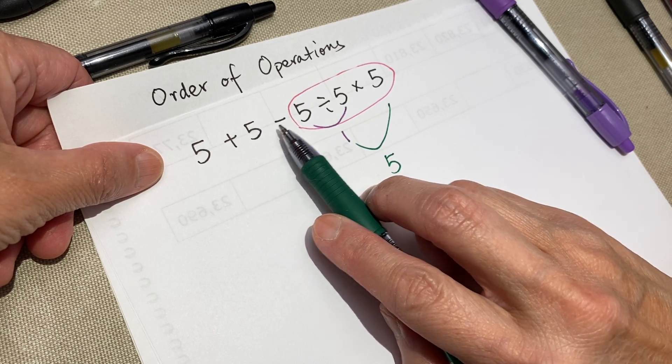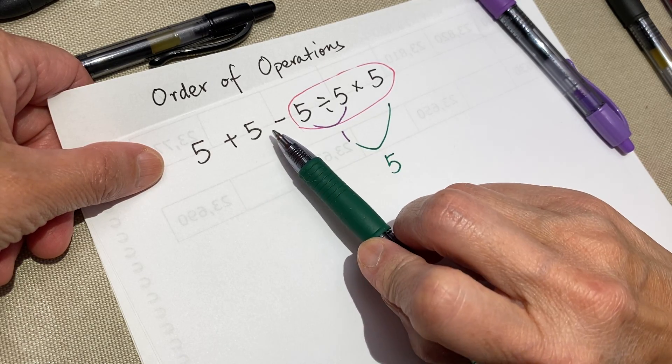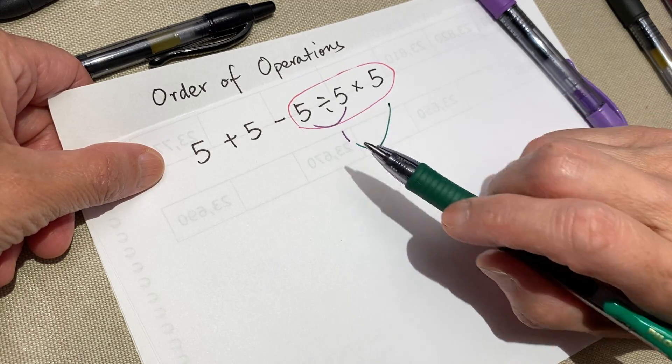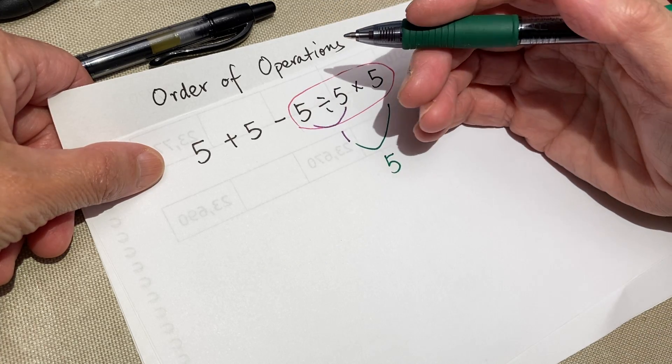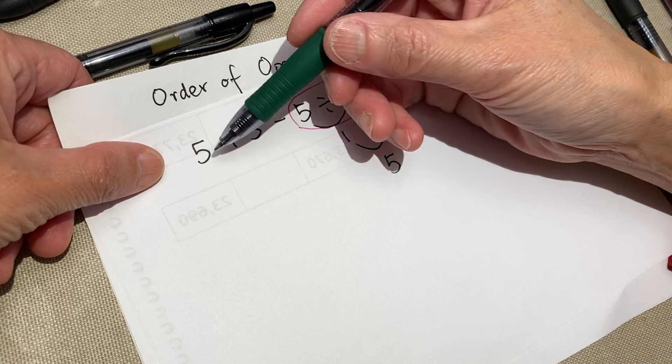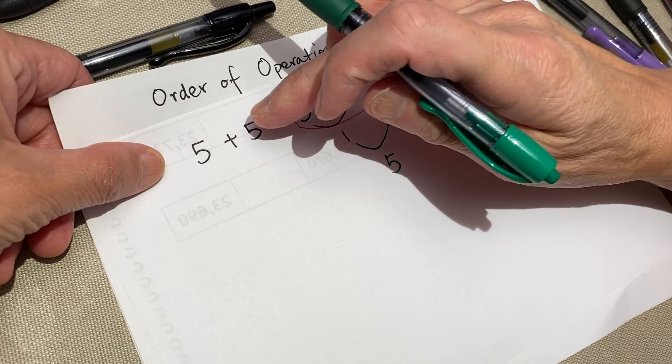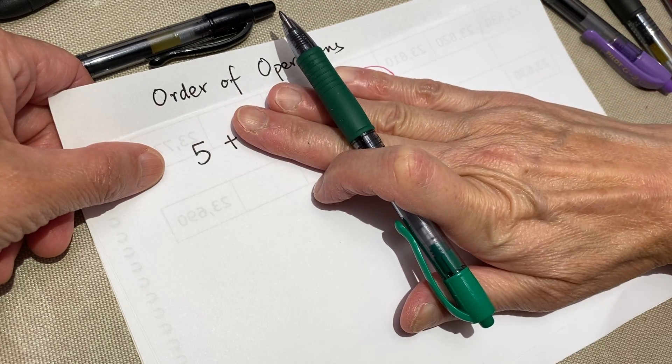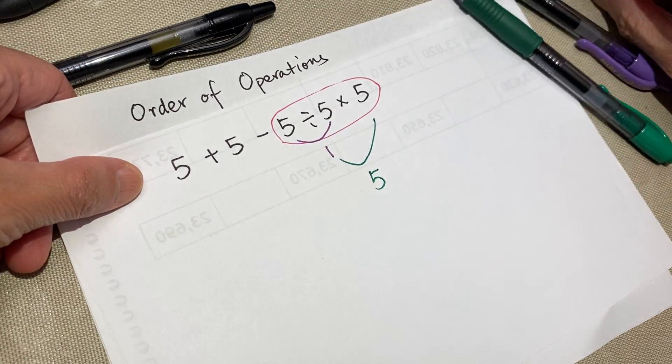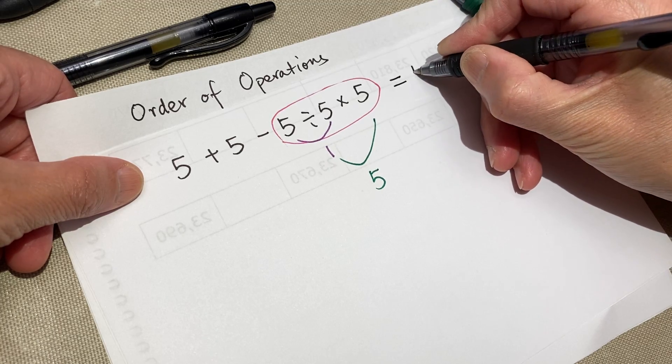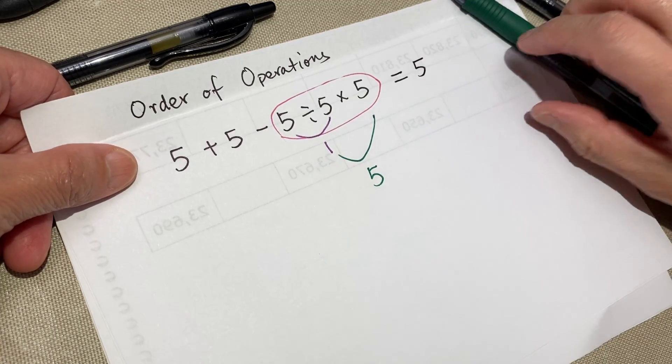Now, five plus five minus five, they are all equal, becomes addition and subtraction. So they are equal. Five plus five minus five. Five minus five is zero. So the final result is five.